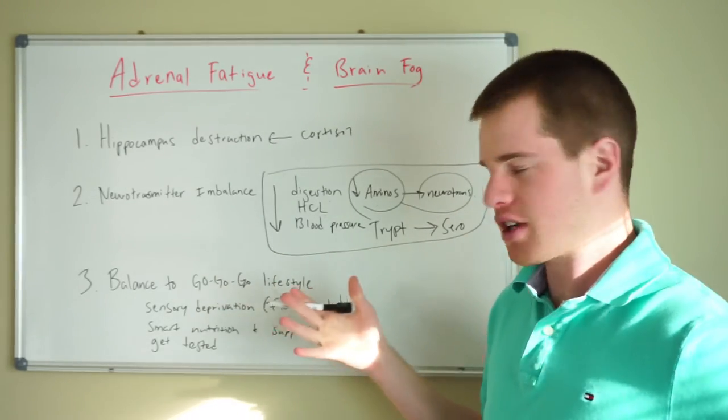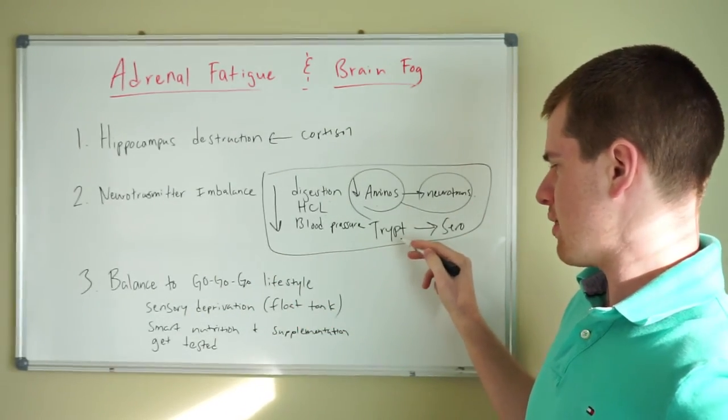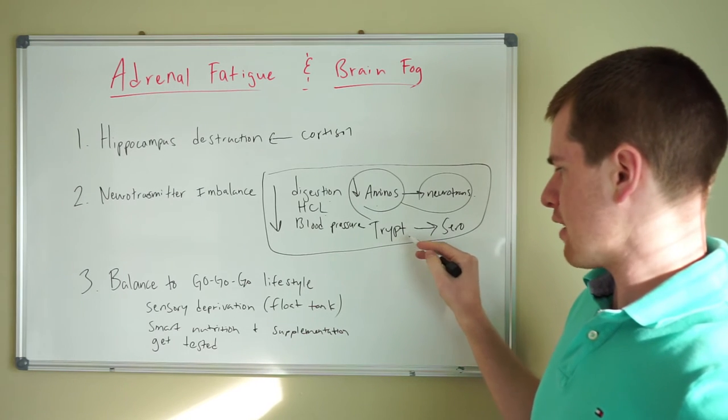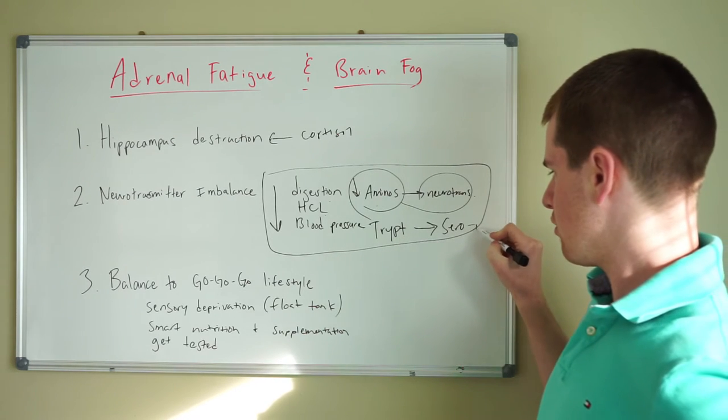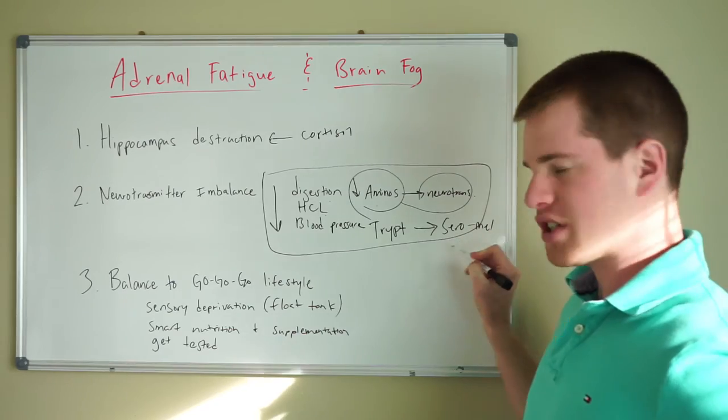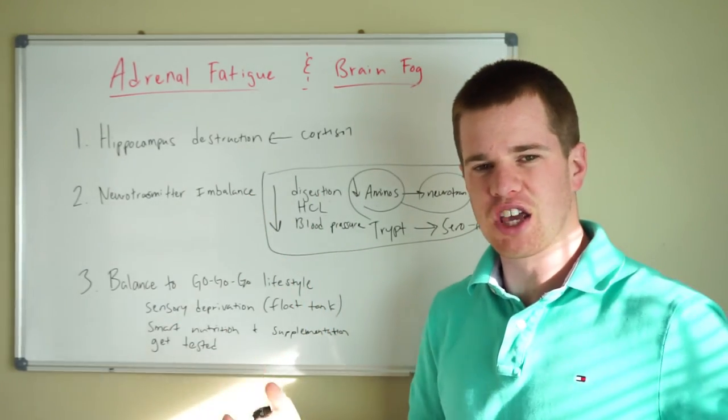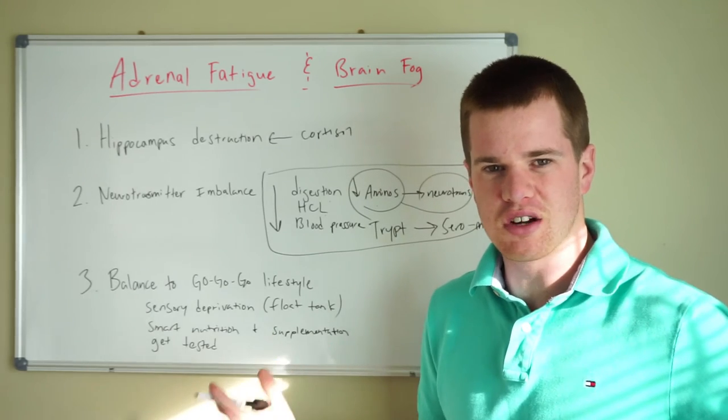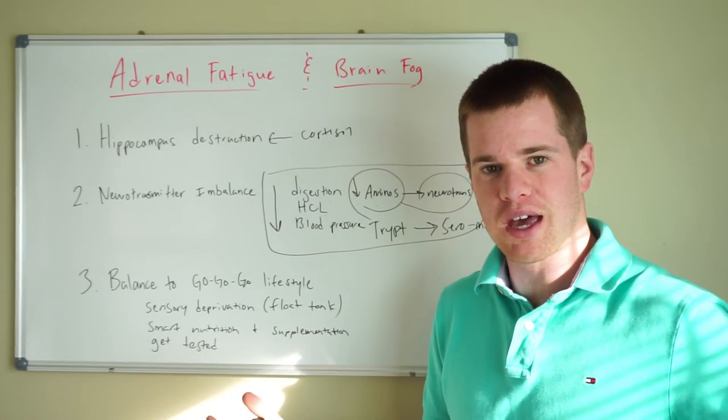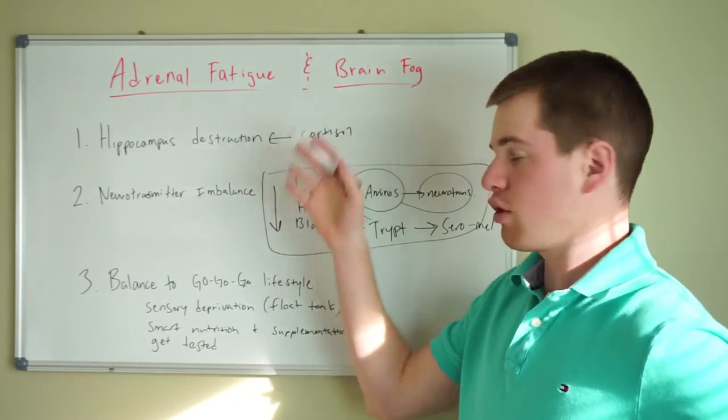Obviously, a lot of people talk about turkey as tryptophan. That's one source. There's many others. Tryptophan eventually gets converted over to serotonin, which gets converted over to melatonin. So this is why with adrenal fatigue, you can be tired and wired at the same time. You're exhausted, but you can't seem to sleep. You may have insomnia with your brain fog.